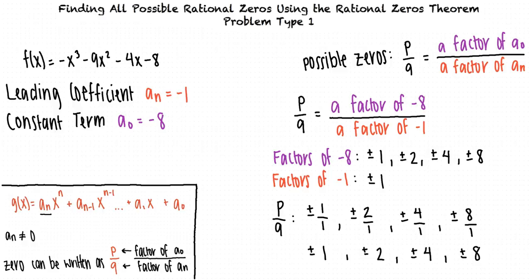That's right — any of these rational numbers have the potential to be zeros for our given polynomial. So when finding all possible rational zeros of a polynomial using the Rational Zeros Theorem, the only possibilities are numbers of the form p divided by q, where p is a factor of the constant term and q is a factor of the leading coefficient. Great work!